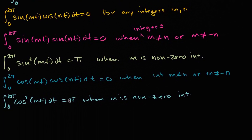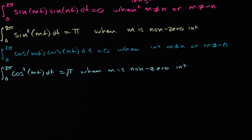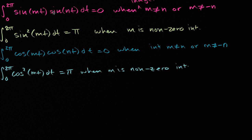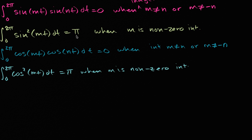I think we only have one more video to go. In the last video, we said that if you take any combinations of sines where m and n are integers that either don't equal each other or don't equal the negative of each other, you're going to get that integral equal to zero. And if they did equal each other, it's just going to be the same thing as sine squared of some multiple of t, and that over the interval from zero to two pi is going to be equal to pi.